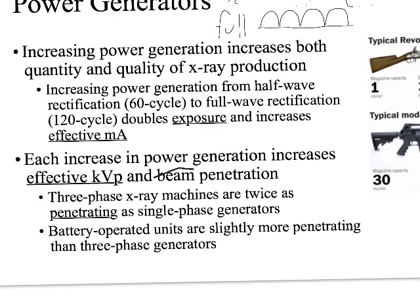To really change the quality of the x-ray, we need to start thinking about moving up to three-phase power generation. Each increase in power generation increases the effective KV and beam penetration. Since we're using the more high-powered weapon, it shoots further and harder with better accuracy. Three-phase x-ray machines are twice as penetrating as single-phase generators.